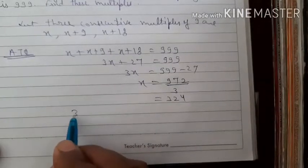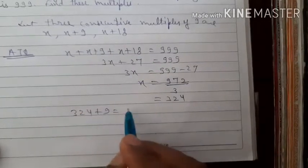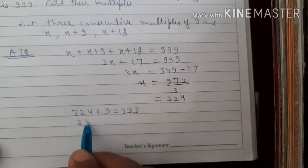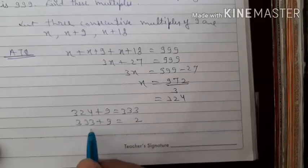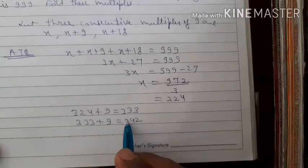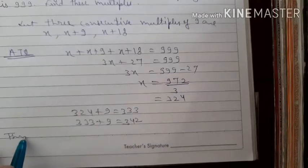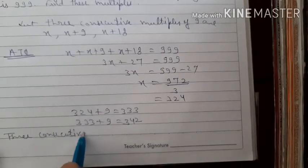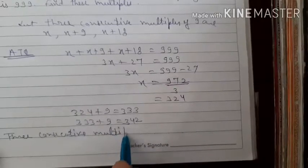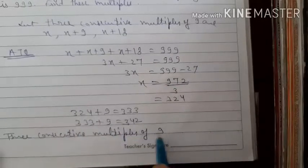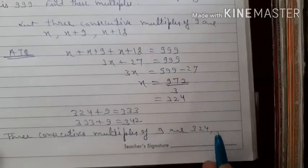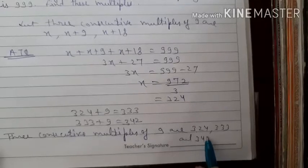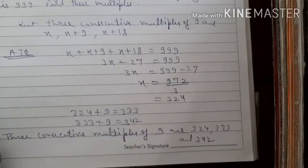The first multiple is 324. Similarly, the second is 324 plus 9 equals 333, and the third is 333 plus 9 equals 342. Therefore the 3 consecutive multiples of 9 are 324, 333 and 342. Adding them gives 999, which confirms the answer.